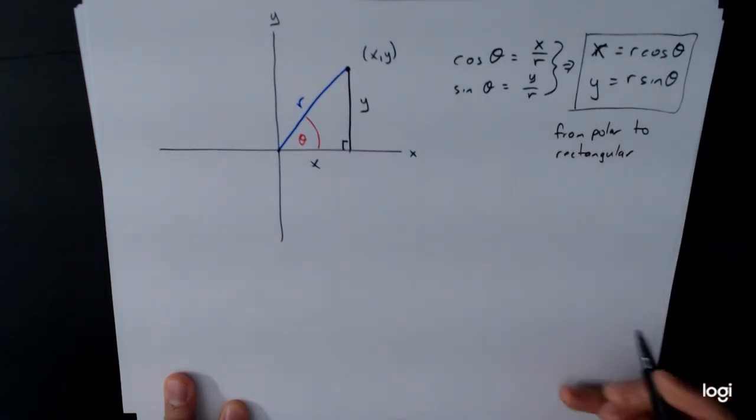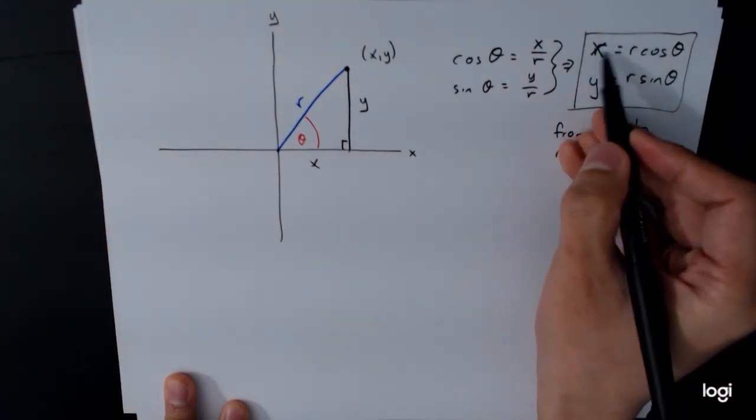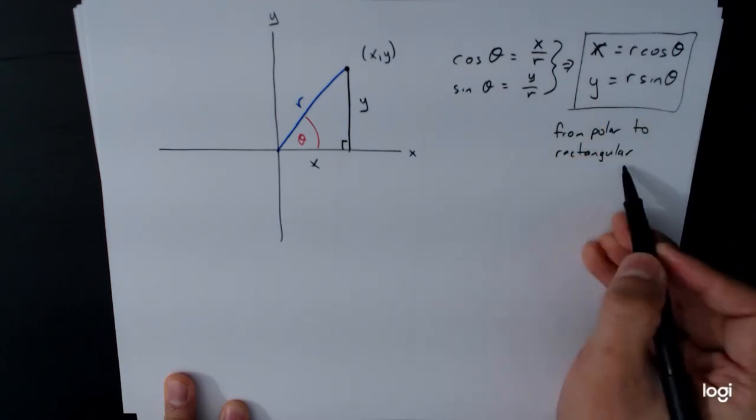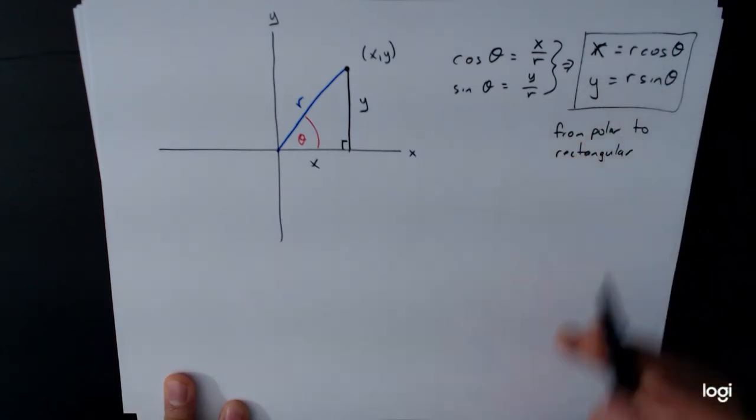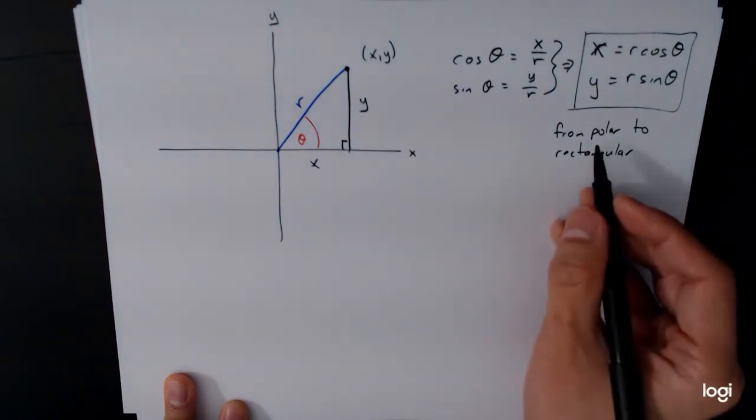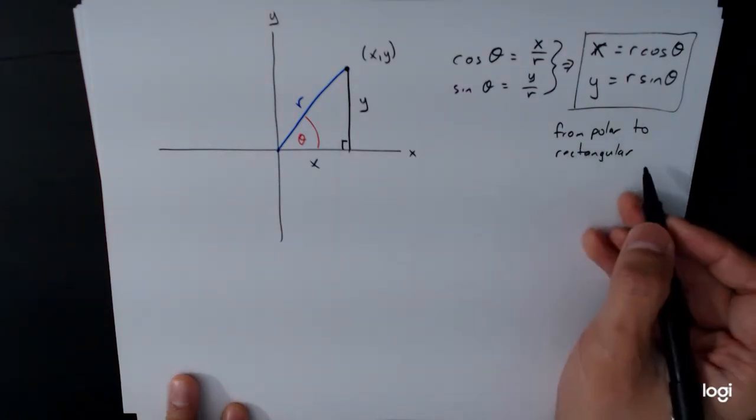Now the way that you remember which way you're going is that in the end, you end up with a formula for x and y, and x and y are the rectangular coordinates. So you start from the polar coordinates r and theta, plug into a formula, and get x and y. And so this is the formula for going from polar coordinates to rectangular coordinates.